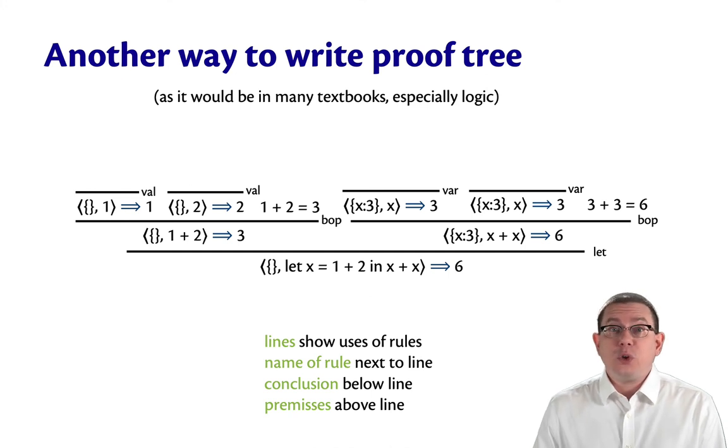So the name of the rule here is written next to the line. There are conclusions below the line and premises above the line at each use of a rule.